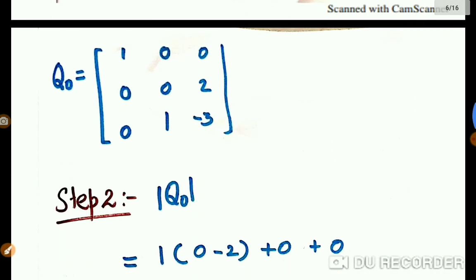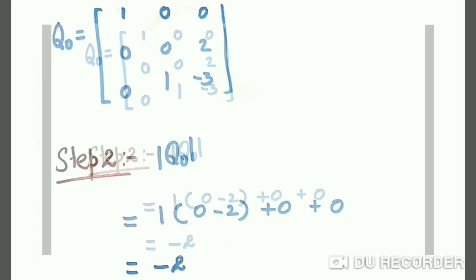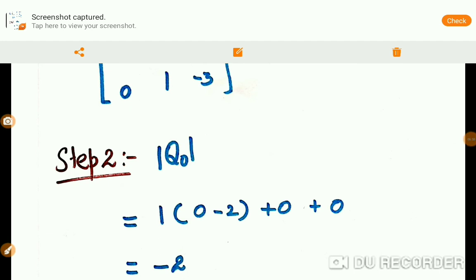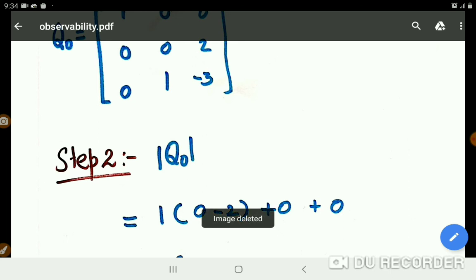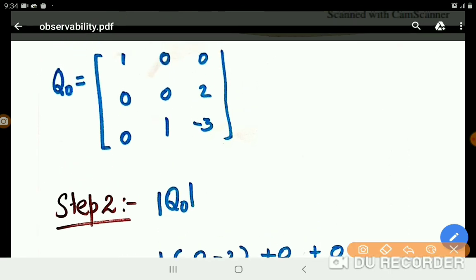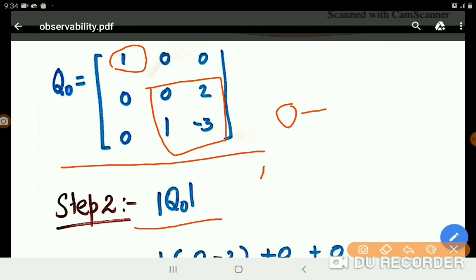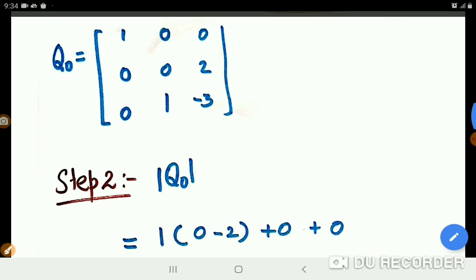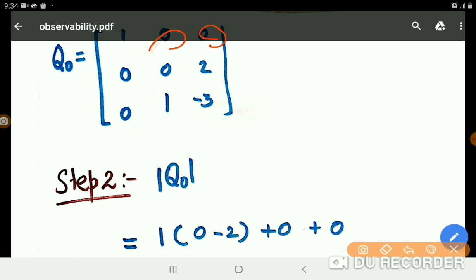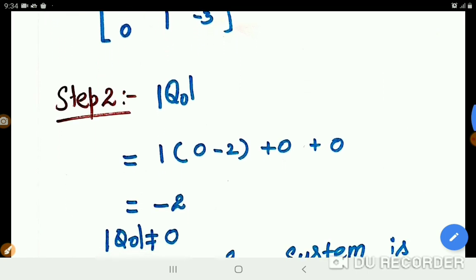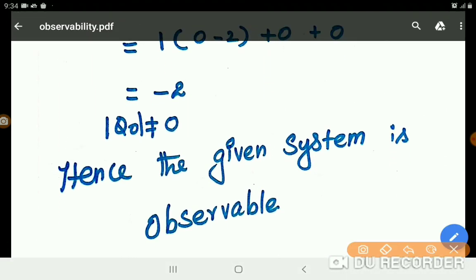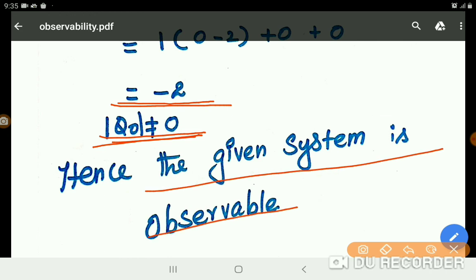Second row, now make all as a determinant value. According to the determinant value, 1 into this matrix as 0, minus 2 times 1, so minus 2 here. Then all other terms are 0, 0. So 0, 0. Here we have minus 2 only. What is the meaning? Our determinant Q0 takes minus 2 means not equal to 0. Hence the given system is observable.